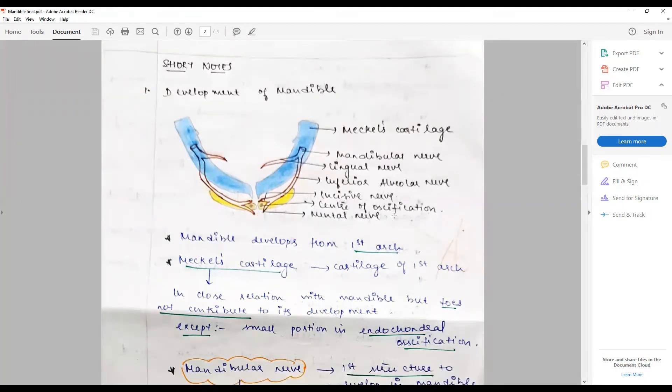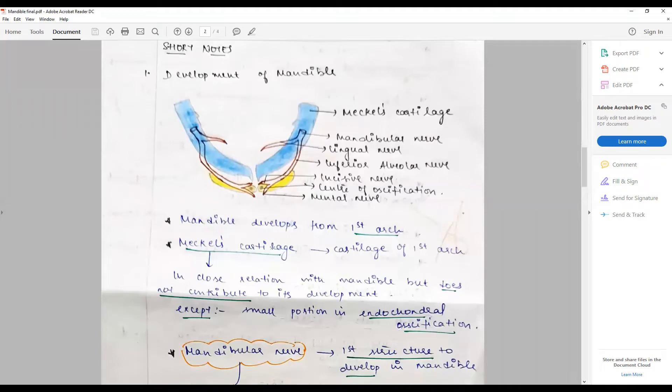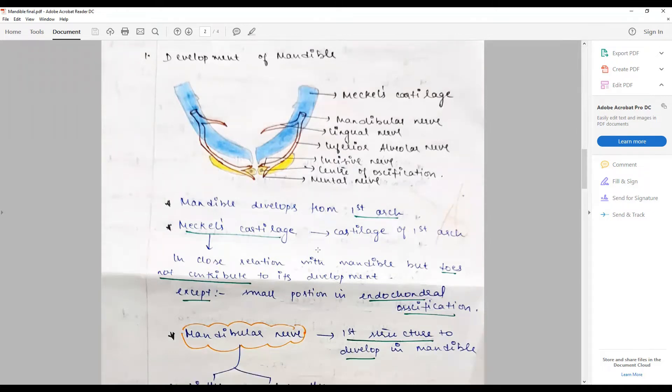Mandible develops from the first arch - this is the single most important point. Meckel's cartilage is the cartilage of first arch. This cartilage is in close relation with the mandible but does not contribute majority to its development except for the small portion in endochondral ossification.